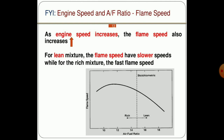As engine speed increases, the flame speed also increases. When plotting a graph of flame speed versus air-fuel ratio, as the gas mixture goes from rich to lean, the trend of the graph is from high to low — meaning for a lean mixture the flame speed is slow, while for a rich mixture the flame speed is high. A lean mixture is one where the percentage of air particles is more, while a rich mixture is one where the percentage of fuel particles is more.